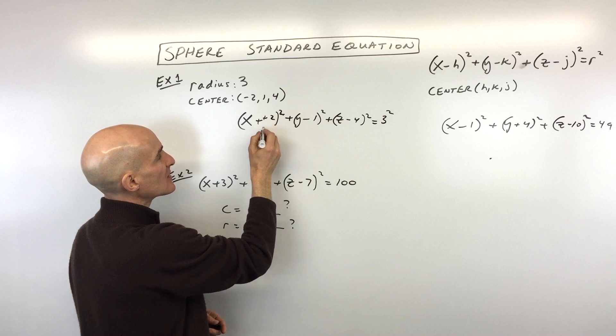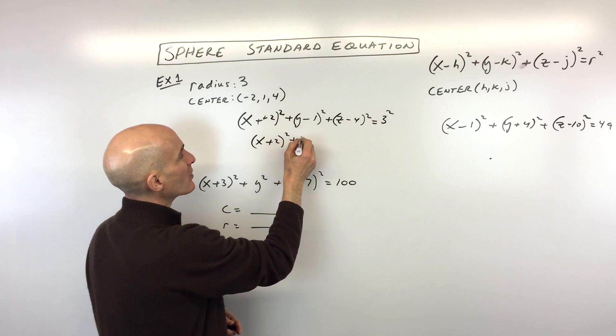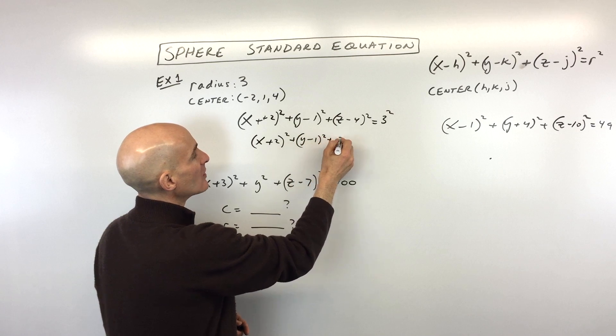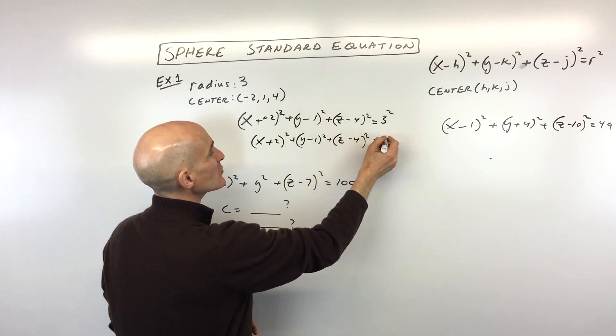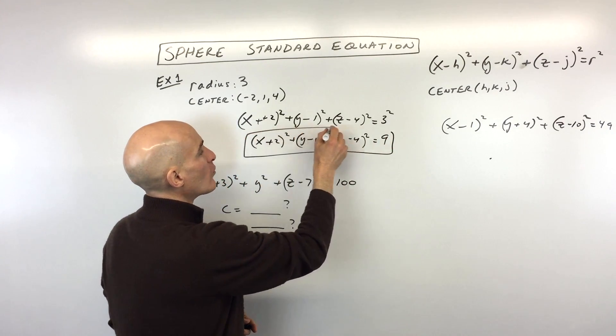Now, if I simplify a little bit, see, when you subtract, that's like adding the opposite. So we can really write this as (x + 2)² plus (y - 1)² plus (z - 4)² equals 3², which is 3 times 3, 9. And you've got it. So let's look at one more example.